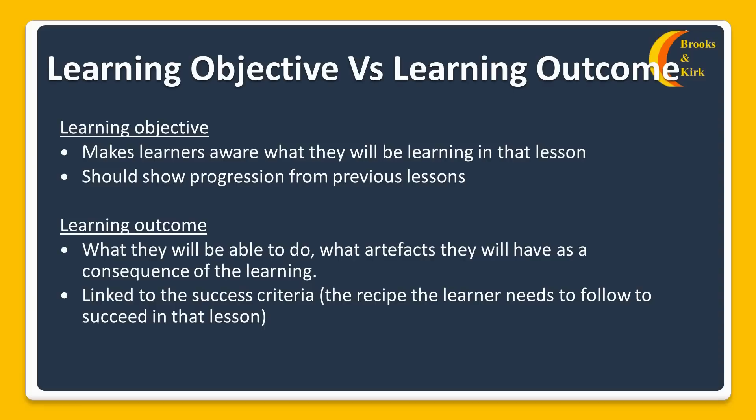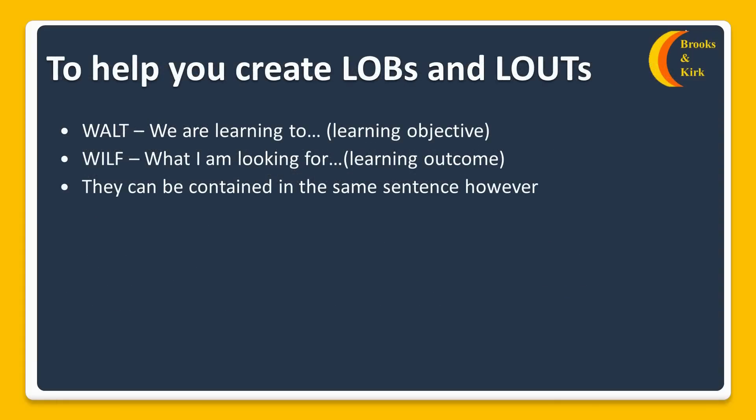A success criteria is a recipe that the learner needs to follow to be successful in that lesson — you're literally spelling it out. There are a few models to help create learning objectives and outcomes. WALT — We Are Learning To — if you're struggling to formulate an appropriate learning objective, using that starter sentence should help it follow quite nicely. WILF — What I'm Looking For — helps you build those learning outcomes, so if you're struggling to dictate exactly what the learner should be doing, you can use that starter sentence.